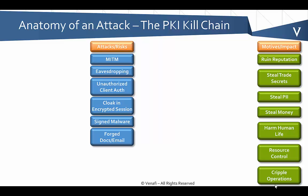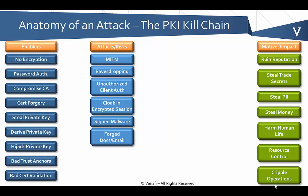In order for somebody to launch one of these attacks, they need either a private key that they've stolen or compromised, or a rogue certificate — one that's being trusted though it's not a trustworthy certificate. There are a variety of enablers that make these attacks possible. First of all, not even doing any encryption: many organizations deploying new systems can't keep up with the volume of certificates they need, especially for internal systems.